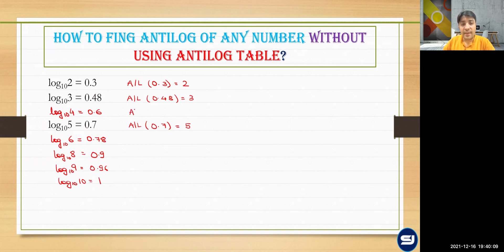So we can say that antilog of 0.6 is equal to four, antilog of 0.78 will be equal to six, antilog of 0.9 is eight, antilog of 0.96 will be equal to nine, and antilog of one is obviously 10.